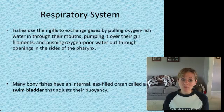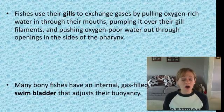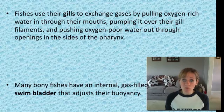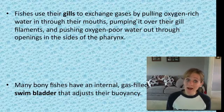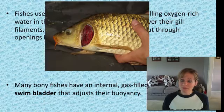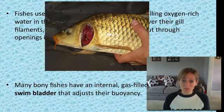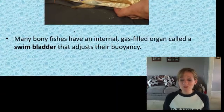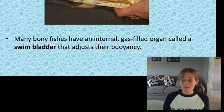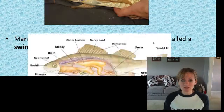How do fish respire? They use gills — they don't have lungs. They're in the water environment, so they exchange gases by pulling oxygen-rich water in through their mouths, pumping it over their gills, and then pushing oxygen-poor water out through the openings on the sides of the pharynx. Many bony fish also have an internal gas-filled organ called a swim bladder that helps them adjust their buoyancy in water.